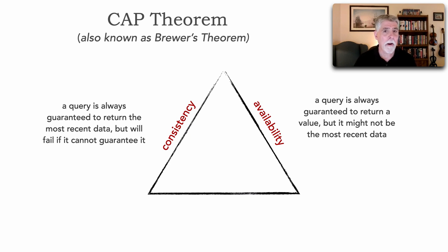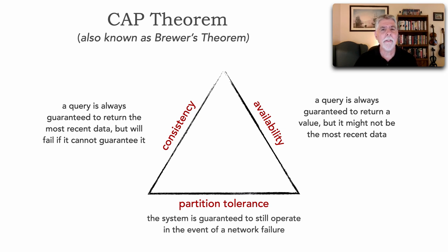The P part is partition tolerance, which says in any given system that the system will continue to operate in the event of a network failure. CAP Theorem says you cannot have all three of these, so pick two.